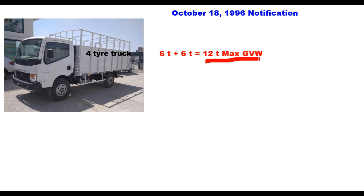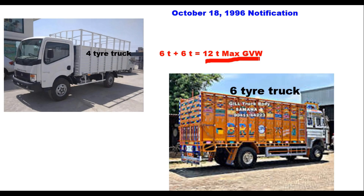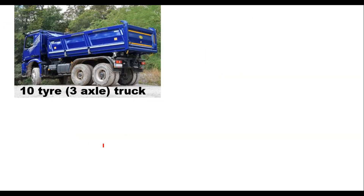That is the maximum gross vehicle weight. A standard six-tire truck has two tires in front and a dual wheel assembly of four tires at the rear. The total gross vehicle weight is 6 tons for the front axle and 10.2 tons for the rear axle, totaling 16.2 tons. Same is the case with the 10-tire three-axle truck: front axle carries 6 tons and the tandem axle with eight wheels carries 19 tons, totaling 25 tons.